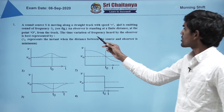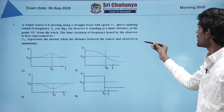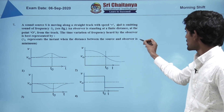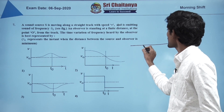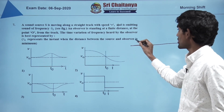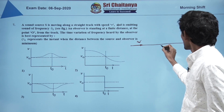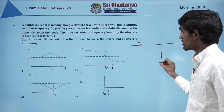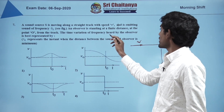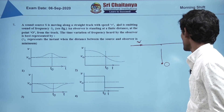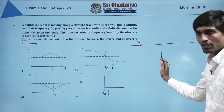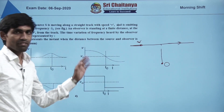A sound source is moving along a straight track with speed v, emitting frequency ν₀. An observer stands at a finite distance at point O from the track. The diagram is provided. At O, we observe the time variation of frequency heard. As the source approaches, it is approaching the observer; during the other position it is going away.